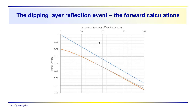Last time around, we asked you to think about the general form of the time-distance relationship for the dipping layer reflection event. That's usually referred to as doing the forward calculation.